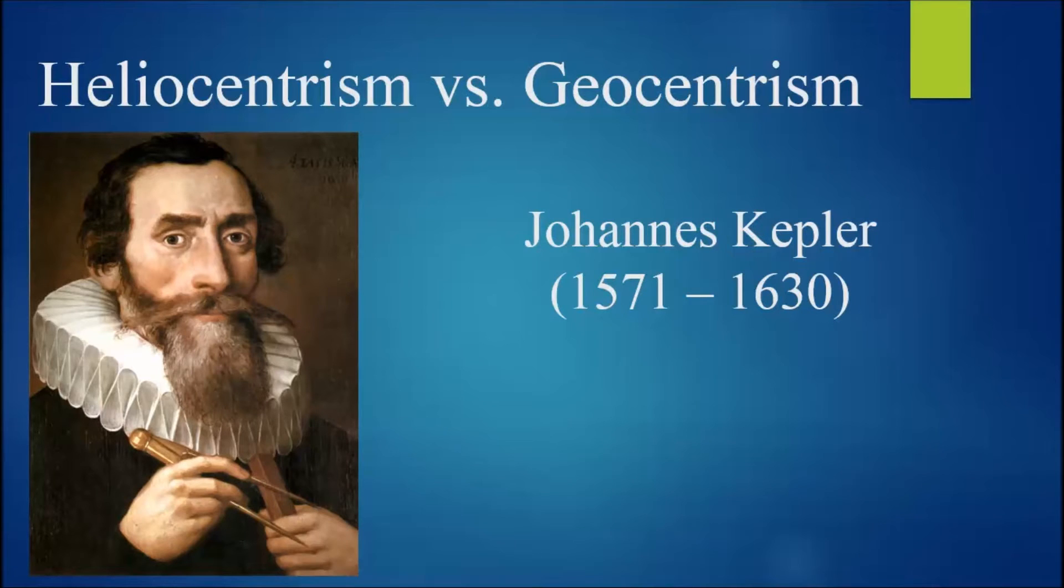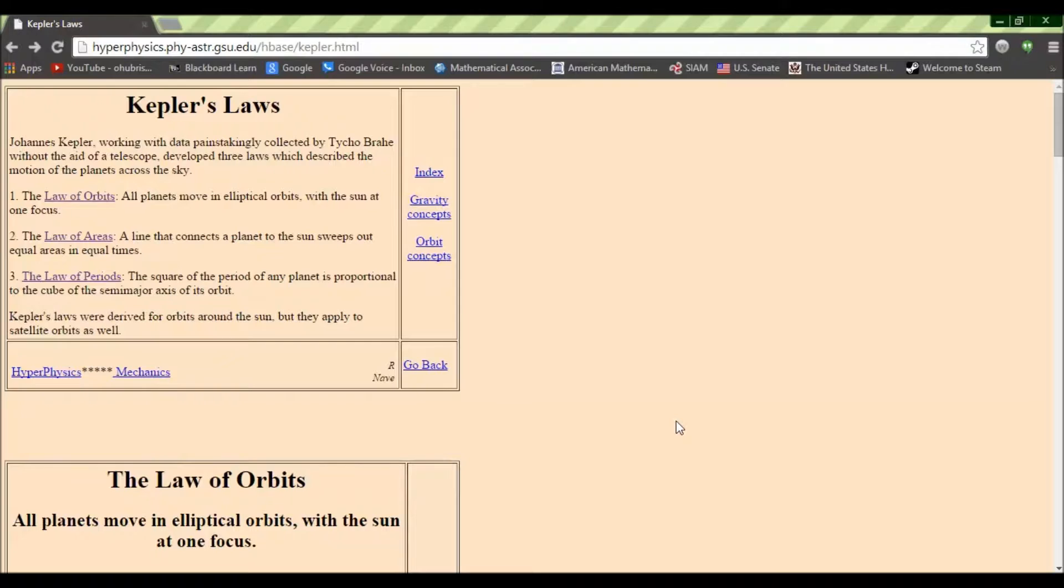Now, one person who embraced the Copernican model was Johannes Kepler, who lived from 1571 to 1630. Kepler discovered three laws of planetary motion based on very careful measurements by the observational astronomer Tycho Brahe. Among his laws, the first is that all planets move in elliptical orbits with the sun at one focus. Now, while his laws were derived for orbits around the sun, they also apply to satellite orbits as well.